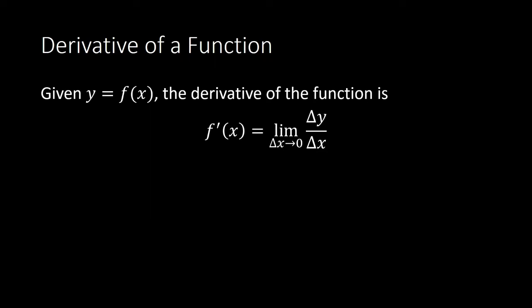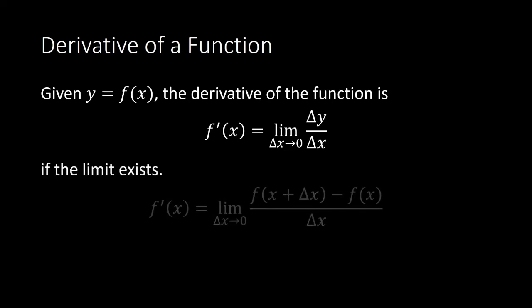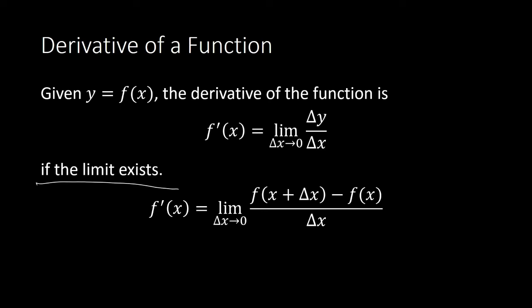Now we are going to change our notation. Instead of writing change in y over change in x, we will write it as the limit of f of x plus delta x minus f of x, all over delta x, as delta x approaches 0. That is the derivative of our function. There is an additional condition: the limit must exist.